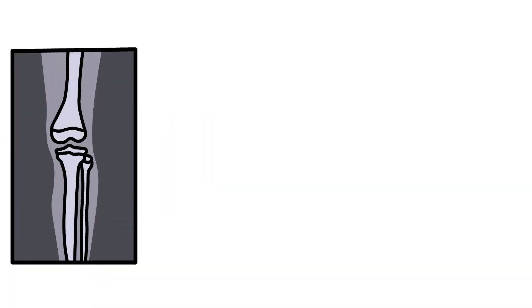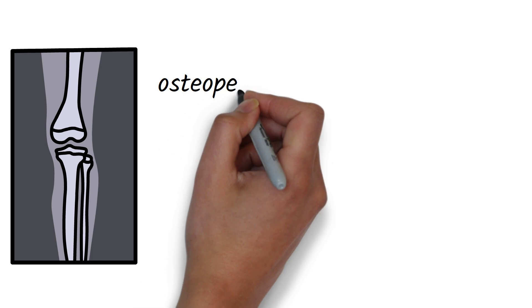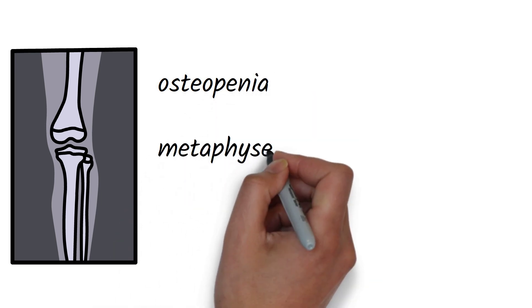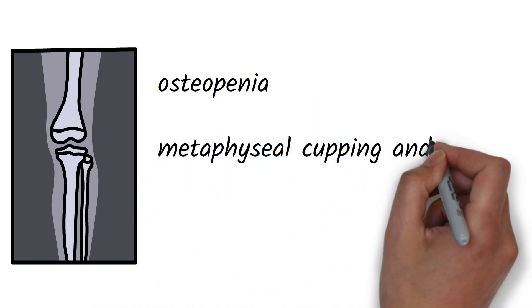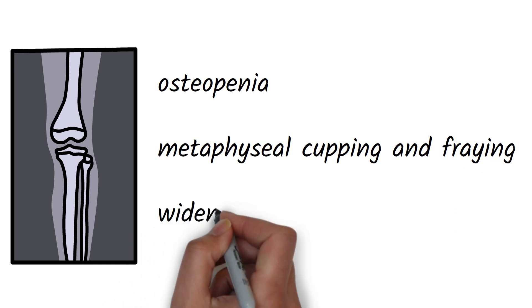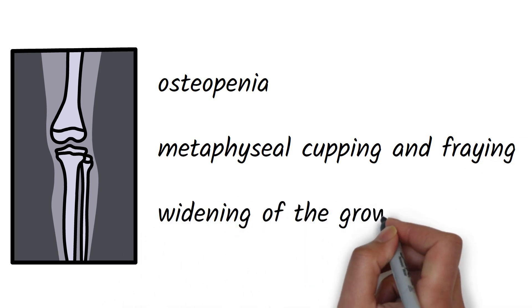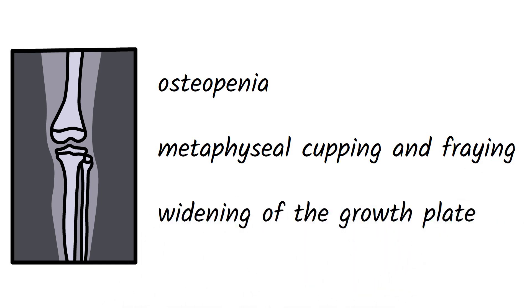X-ray features include osteopenia, metaphyseal cupping and fraying due to blurring of the metaphyseal margin and also because of the soft bones, and you will also see widening of the growth plate.